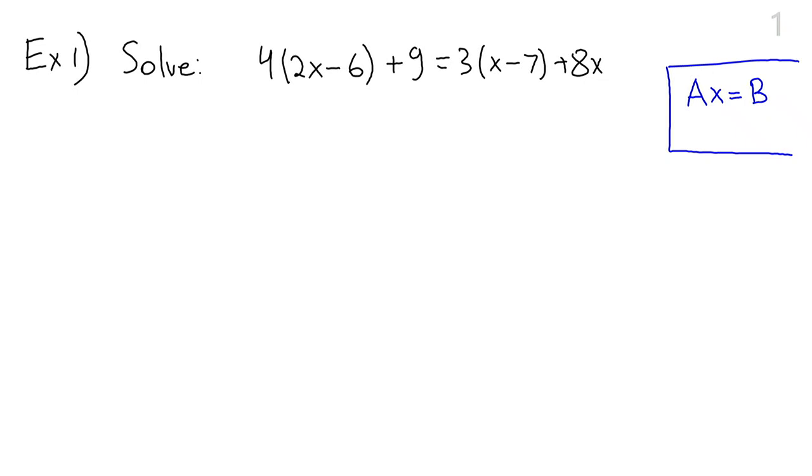The first step here is to distribute and get rid of all the parentheses because the x's are trapped inside the parentheses. You cannot get all the x's on one side and all the numbers on the other side if your variable x is still trapped in the parentheses. So first step is we distribute. We have 8x minus 24. The most common mistake is to forget to distribute to the second term of the binomial. On this side we have 3x minus 21 plus 8x.